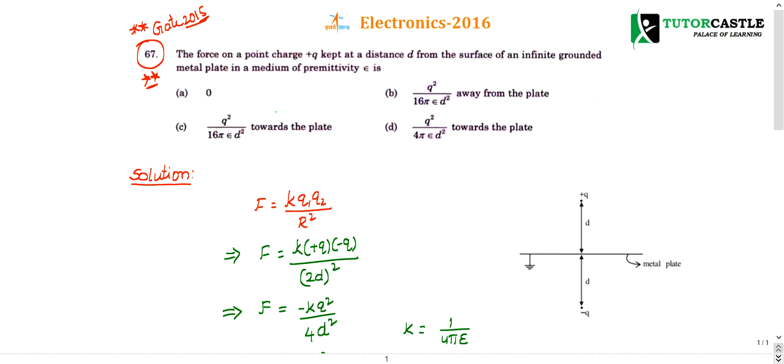Question on electrostatics: The force on a point charge q kept at a distance d from the surface of a grounded metal plate in a medium of permittivity epsilon. The question looks simple, but if you can draw the diagram, then you can solve this question.